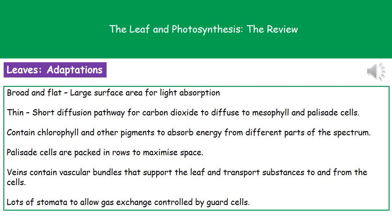We need to consider the adaptations that plant leaves have to allow them to carry out photosynthesis. The first is that they tend to be quite broad and flat. The reason behind this is that it gives them a large surface area to allow them to absorb more light — and as we know, light is needed in photosynthesis.